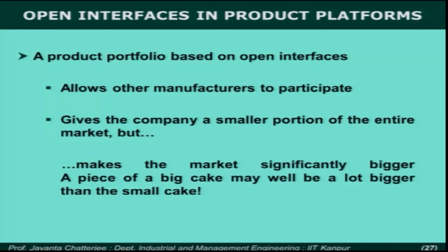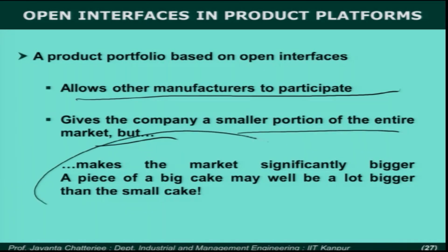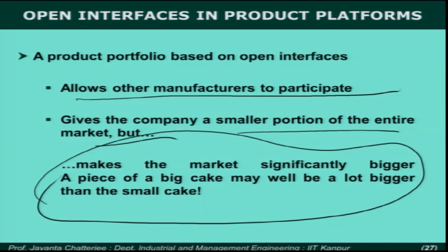Remember the TAM 1 — your addressable market to start with — but then step by step, using this modular approach, you can at one point cover the entire TAM 2, or the total addressable market. All kinds of breakfast cereal markets can be addressed once you approach this, because you can then increase the speed of deployment. Another important point is that a product portfolio with open interface often allows other manufacturers to participate, giving the company a smaller portion of the entire market.